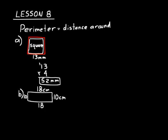Or we can think of distance around and use our red dot again moving around the perimeter of this rectangle. Go 10, then add 18 — that's 28. Then add another 10 to get 38. Then add a final 18: 38 plus 18. Writing those down: 8 plus 8 is 16, carry 1; 3 plus 1 is 4, giving us 5 — that's 56. Don't forget the units: 56 centimeters is the perimeter of that rectangle.